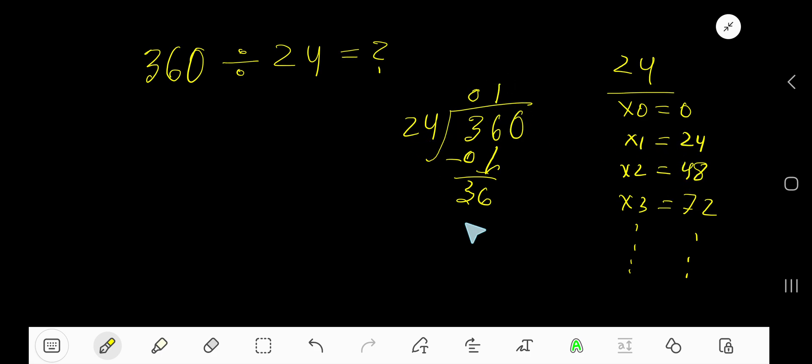Now subtract: take away 4 from 6, and take away 2 from 3 to get 1. Bring down the 0 to get 120. 24 goes into 120 how many times? 3 times 24 is 72.